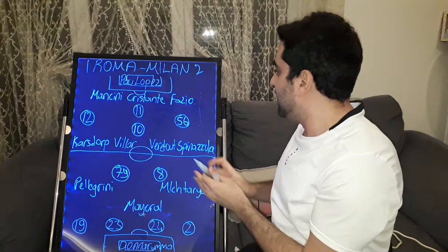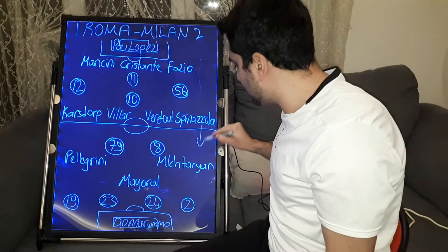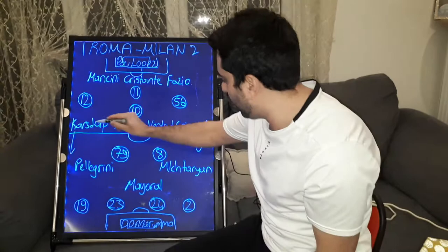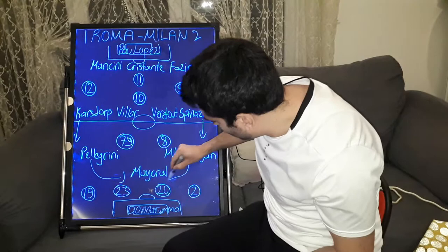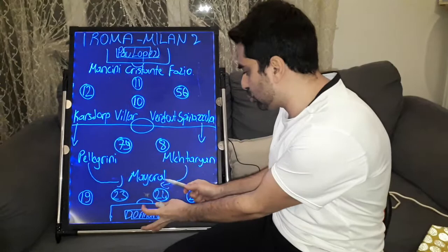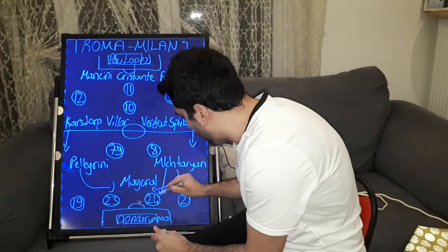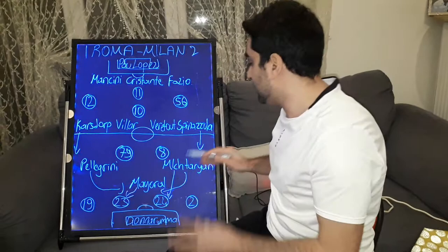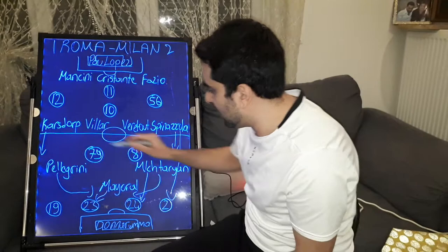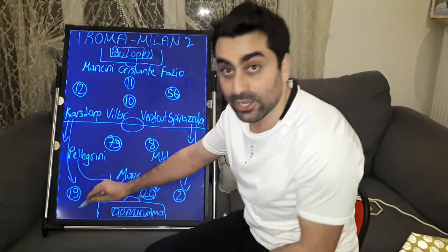In Roma, every time on the wings of the midfield, Spinazzola and Karsdorp came forward and supported the attacks. When they came forward, Pellegrini and Mkhitaryan moved into the middle and got into Milan's penalty area searching for goal positions. Mkhitaryan pressed defender Simon Kjaer and Borja Mayoral pressed the other central defender Tomori. At the same time, Spinazzola pressed right back Calabria and Karsdorp pressed left back Theo Hernandez.